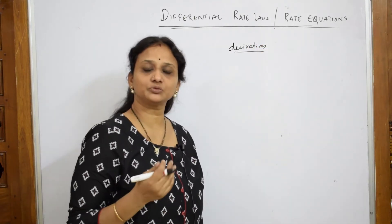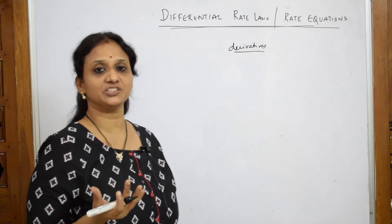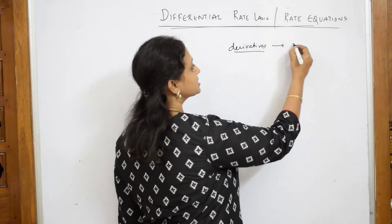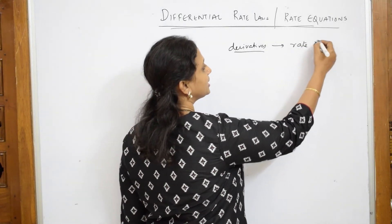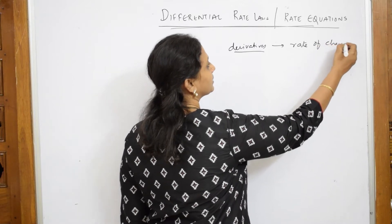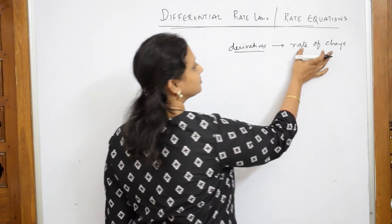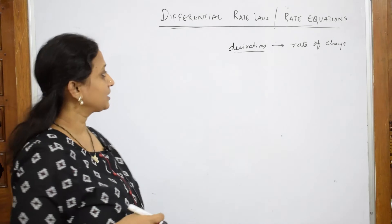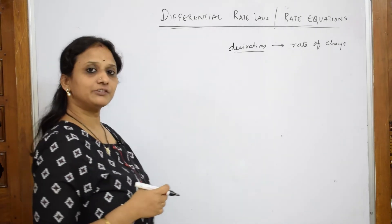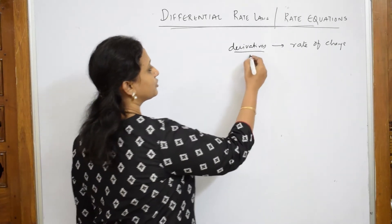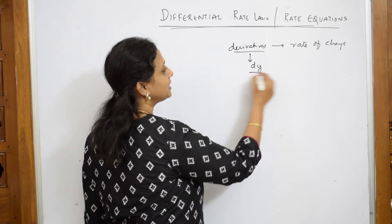Basically, derivatives are those which will explain the rate of change. We use these derivatives for explaining the rate of change — that means the change with respect to your time. This derivative we express in the form dy by dx.